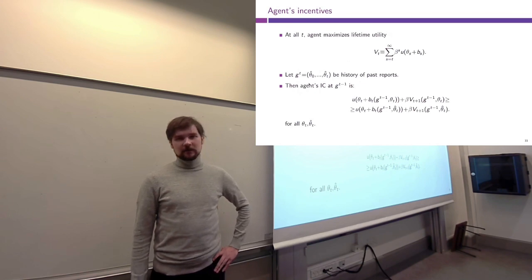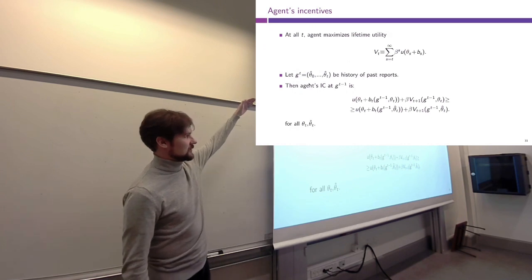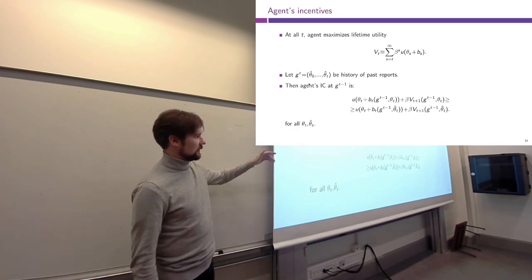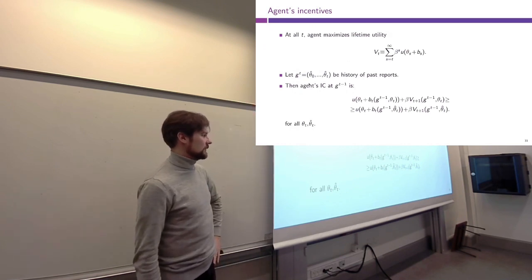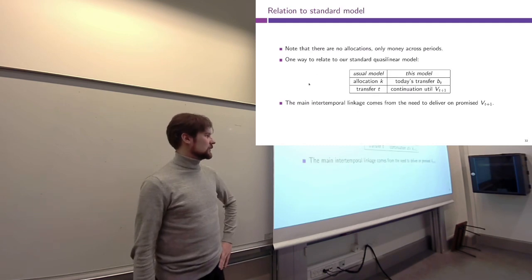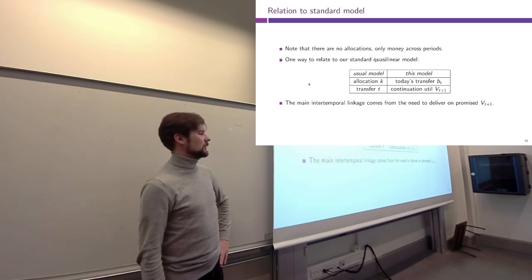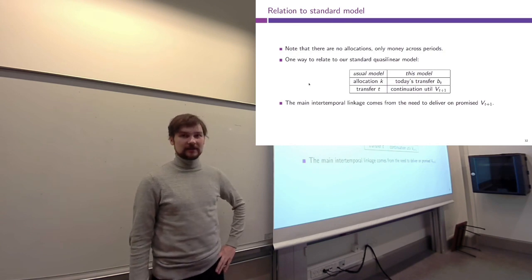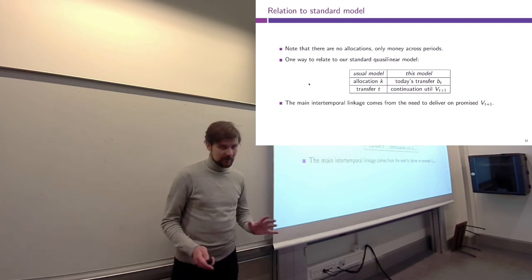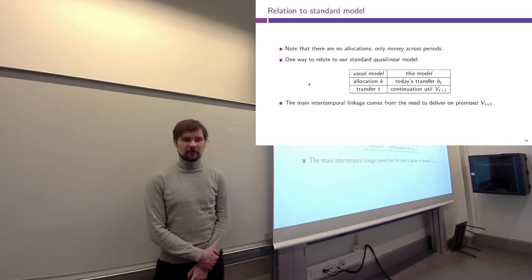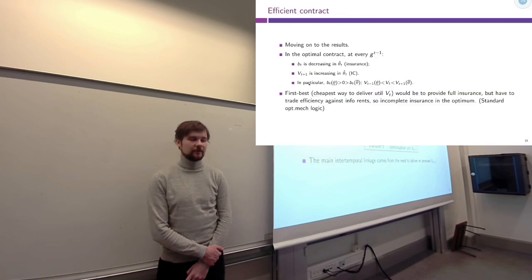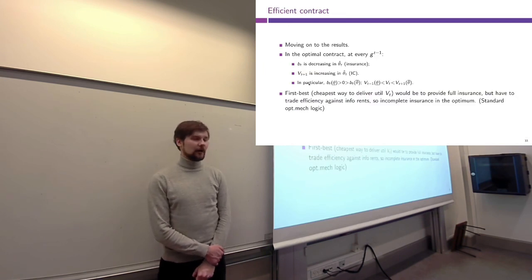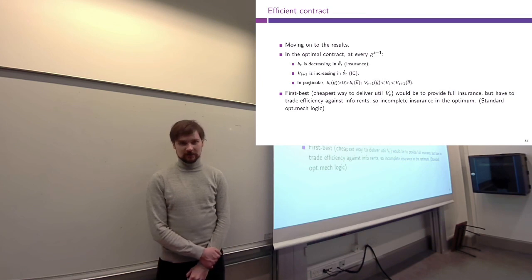The slides go over this model in slightly more detail, showing explicitly what the utility is, what the agents' incentive compatibility constraints look like, and how this model relates to the more standard canonical models we had earlier. I will not go through them in this lecture, but you are welcome to consult the slides or pause the video to read through them.